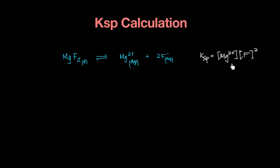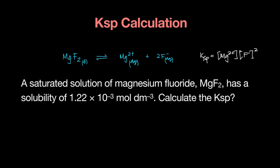Now, how does one find a value for this? That's the next thing we're looking at — how do I find a value for the KSP expression for anything. So let's take a look at a question. Working with the solution we already have, magnesium fluoride: a saturated solution of magnesium fluoride has a particular solubility.